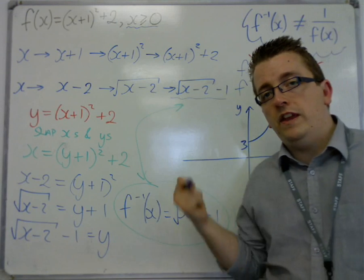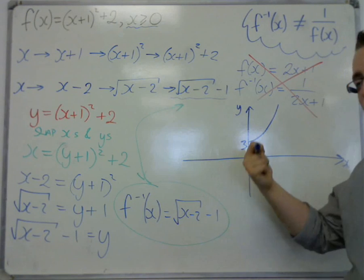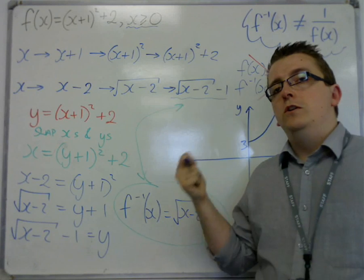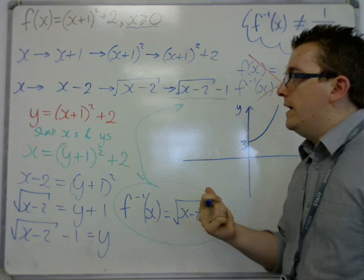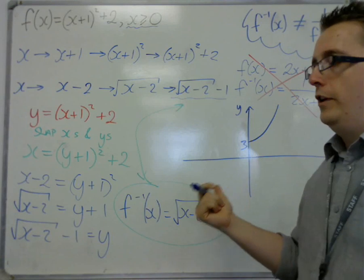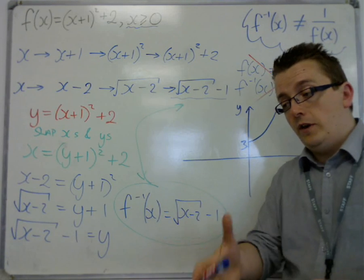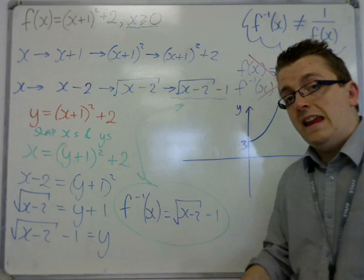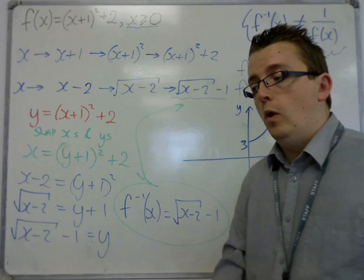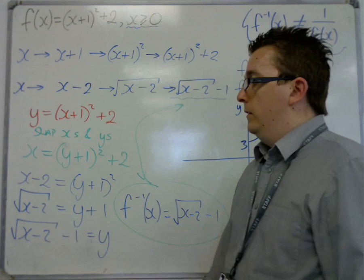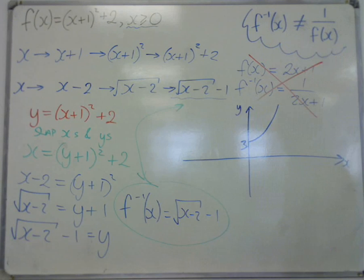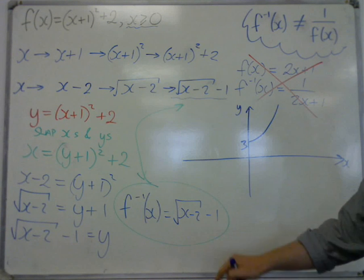You should notice here that this graph is 1 to 1. It must be very clear that you can only have the inverse function, find the inverse for a function, if the function is 1 to 1. Because otherwise, well, I'll show you an example in a minute to explain why you can't have that.